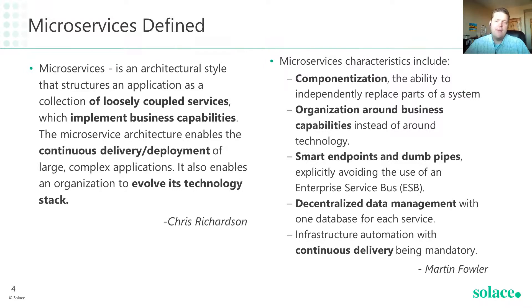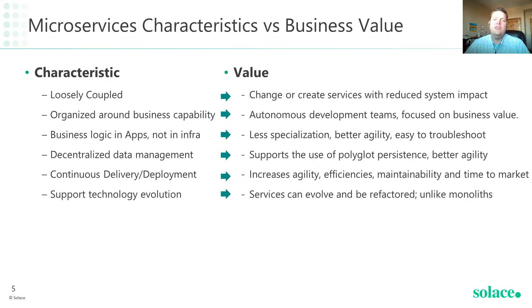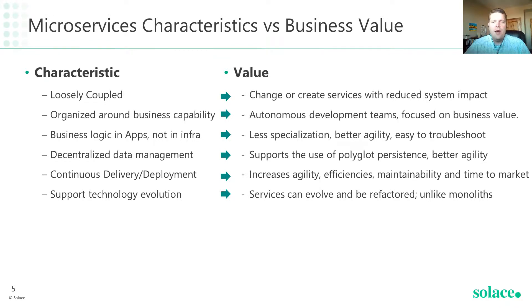Now that we have that foundation set, let's take those characteristics and relate them to business value, because while it may be interesting from a technology perspective, we ultimately have to align with business objectives to be successful. The first characteristic is loosely coupled. The business vision is that change can occur and we can be in sync with business changes without major ripple effects, and that new services can be plugged in with reduced system impact. This was sort of possible with simple monolithic code bases.